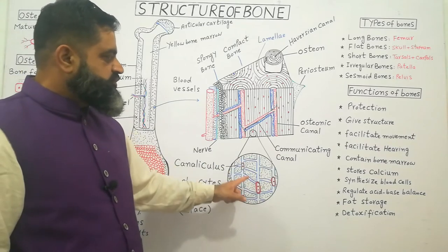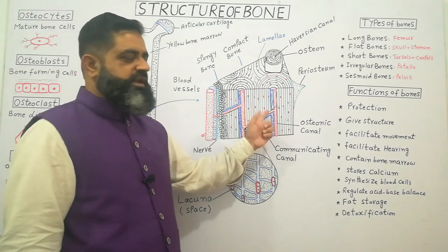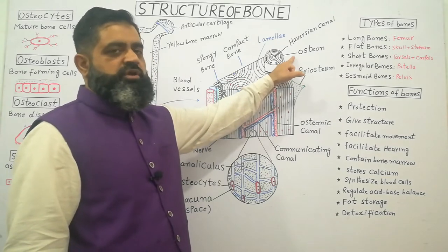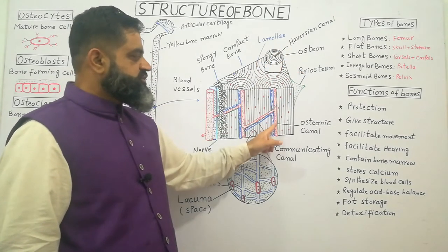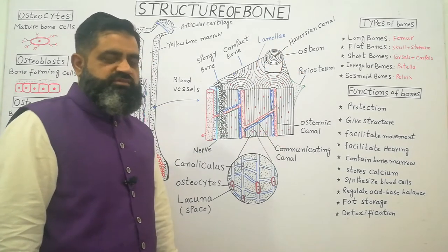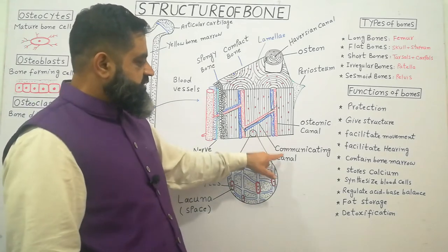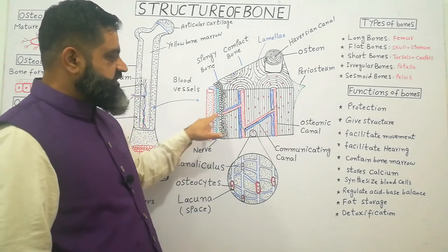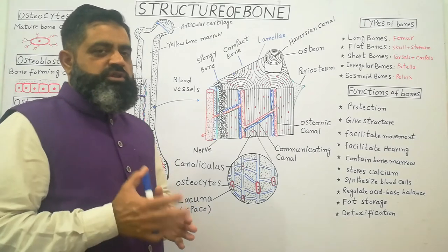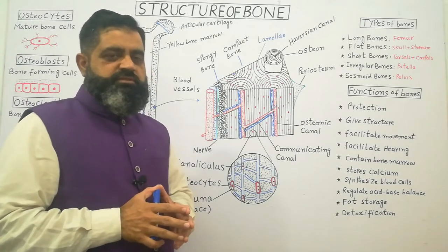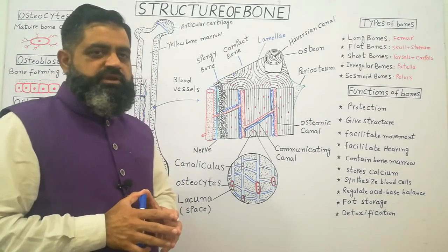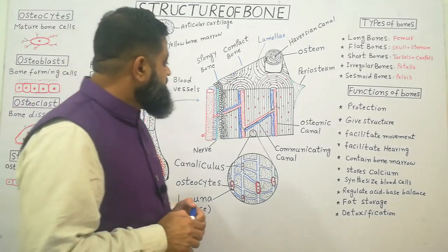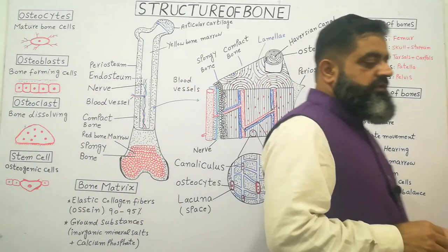These parts of the bone join together to form lamellae, and the lamellae join to form osteones. Osteones contain osteonic canals, also known as Haversian canals, along with communicating canals that connect the Haversian canals with each other. In this way, all bones are provided with blood supply, nerve supply, and lymphatic supply.